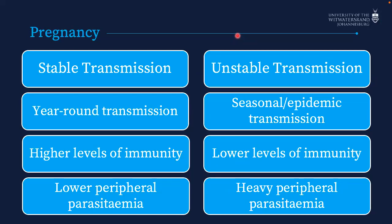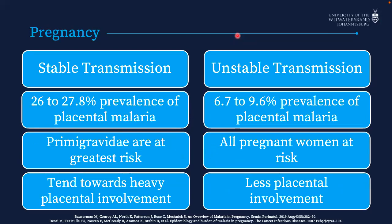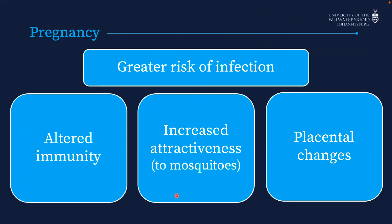There's an important difference in malaria and pregnancy between stable and unstable transmission areas. In stable transmission there's a much higher prevalence of placental malaria, and primigravidae are at greatest risk. In unstable transmission — which is South Africa — all pregnant women are at risk, with less placental involvement. The key point is that in our setting, all pregnant women are at greater risk.